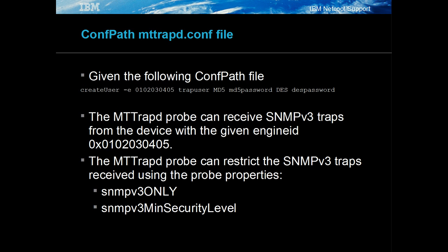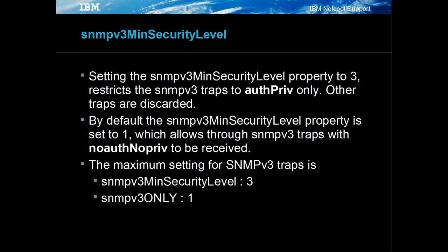For any given trap source, the probe can restrict the security of the traps being received. For a given mttrapd.conf file entry, the probe can restrict traps further using SNMP v3 only and SNMP v3 min security level. For example, if only SNMP v3 traps are required, set SNMP v3 only to 1.